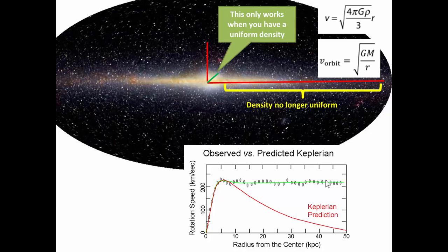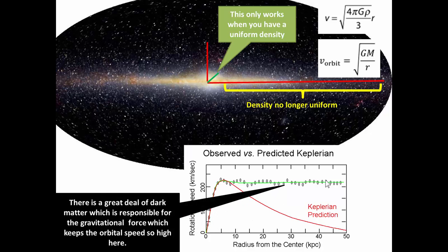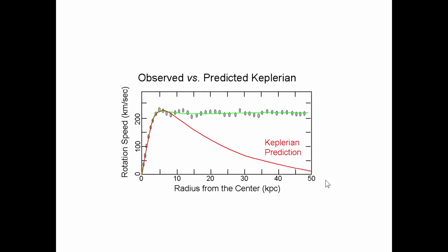There is some mass there which is causing this force but it's basically dark. We can't see it. There is basically a great deal of dark matter which is responsible for the gravitational force which keeps the orbital speed so high in the flat part of the graph.